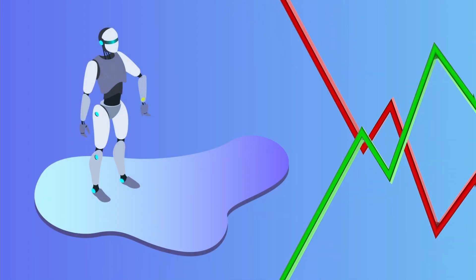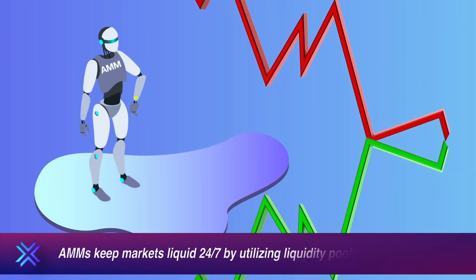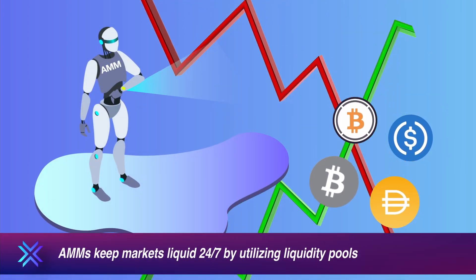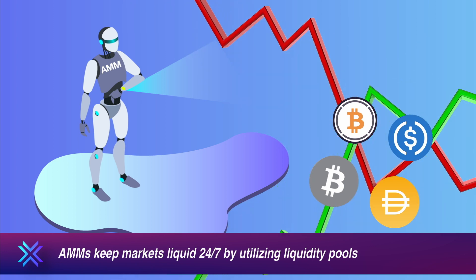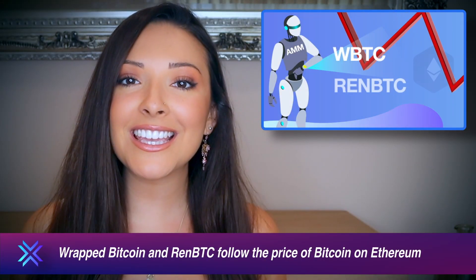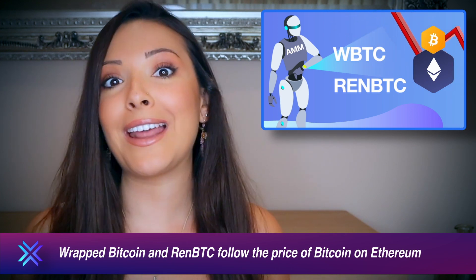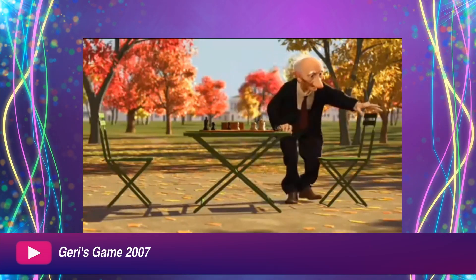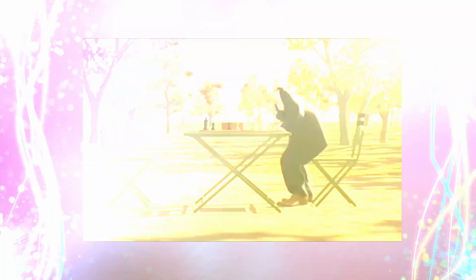Using the platform's Automated Market Maker, or AMM, traders can exchange stablecoins like USDC and DAI, and other assets like Wrapped Bitcoin and Ren BTC, which follow the price of Bitcoin on Ethereum. Curve's AMM ensures that you don't need a buyer or a seller on the other side of your order. Even if no one is selling on the day that you use the Curve DEX, you can still complete your trade.